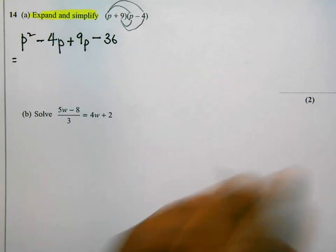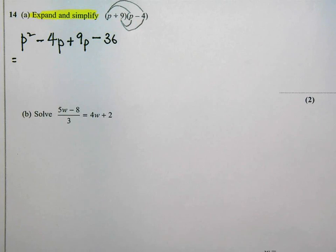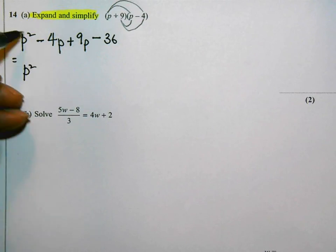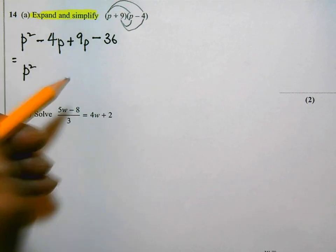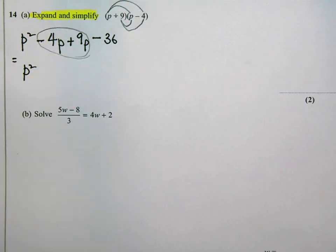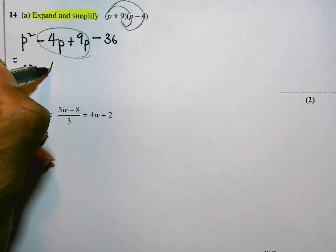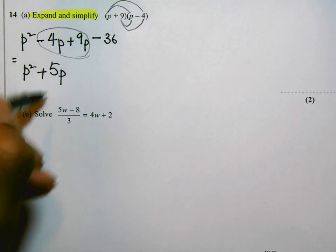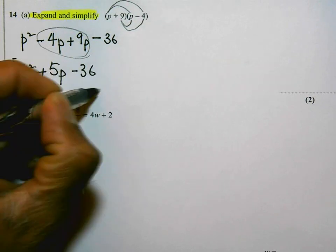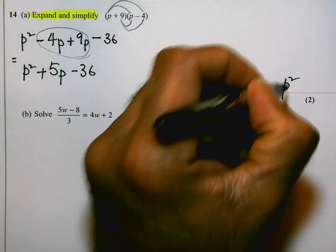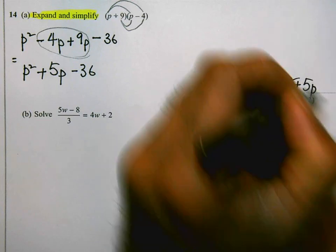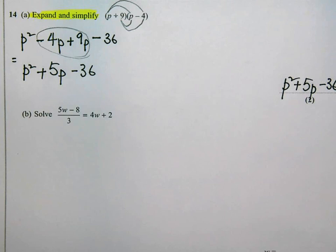Okay, so I've picked up one of these two marks already for just doing what I've done there. Now I need to simplify. I've got P squared, just one of those. I need to combine all these P's together. I've got minus 4P and 9P, and that's a positive 9P. 9P take away 4P is 5P, that's positive 5P. And then at the end I've got 36. So that's it: P squared plus 5P take away 36.